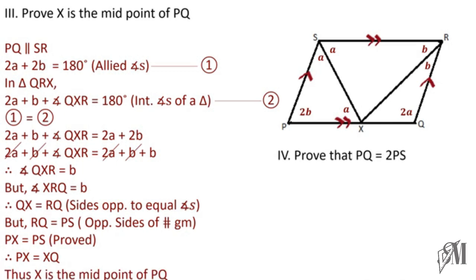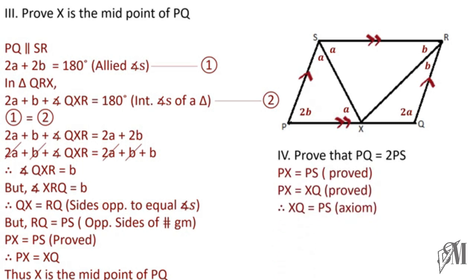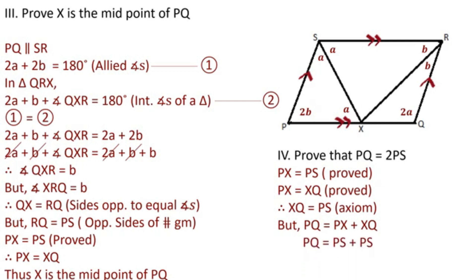For the last part, we prove PQ equals two times PS. We have proved PX equals PS, and PX equals XQ, so XQ equals PS by the axiom. Since PQ equals PX plus XQ, and both PX and XQ individually equal PS, we can write PQ equals PS plus PS, giving us PQ equals two times PS.